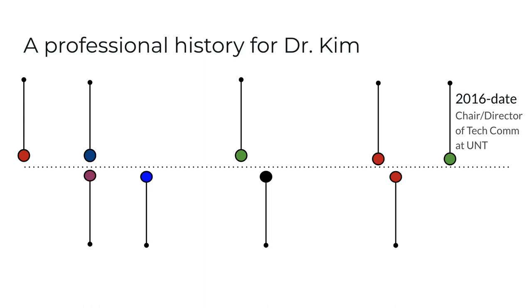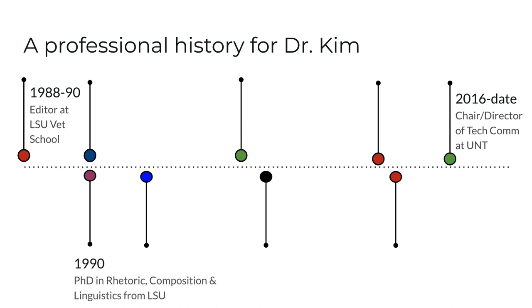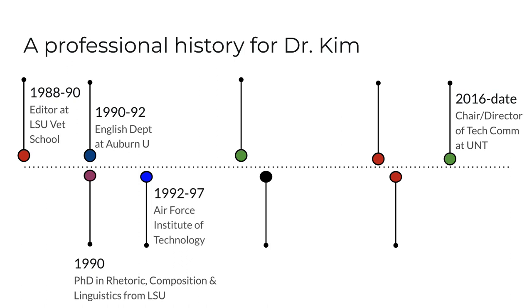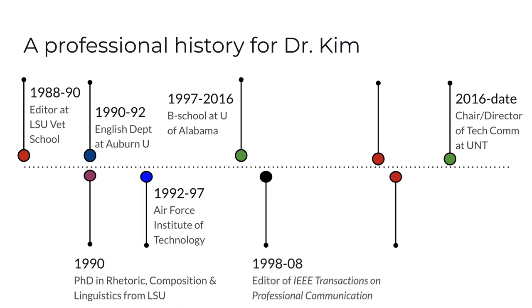Back to my brief professional history leading up to 2016: my passion for language eventually led me to grad school to study linguistics and tech writing. While in school in the late 80s, I worked as a tech editor. I earned my PhD from LSU in 1990 after completing my dissertation research on applications of linguistics to professional writing. My first job as a professor was in the English department at Auburn University. In 1992, I began work as a professor and researcher at the Air Force's postgraduate school. Then in 1997, I joined the business school at the University of Alabama, where I stayed for 19 years. During that time, I also served as editor of the IEEE Transactions on Professional Communication for more than 10 years.